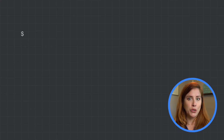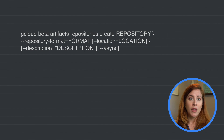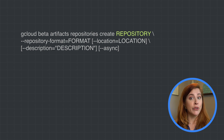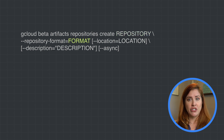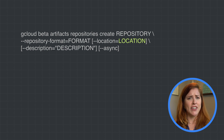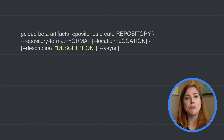To create a new repository, type your GCloud command in this format, where 'repository' is the name of your new repository, 'format' is the repository format — either Docker, Maven, or NPM — 'location' is the regional or multi-regional location for the repository (you can leave this out if you've set a default location), and 'description' is an optional description of the repository.